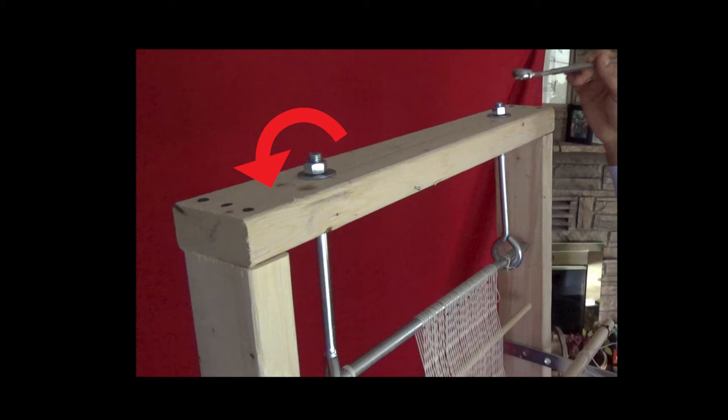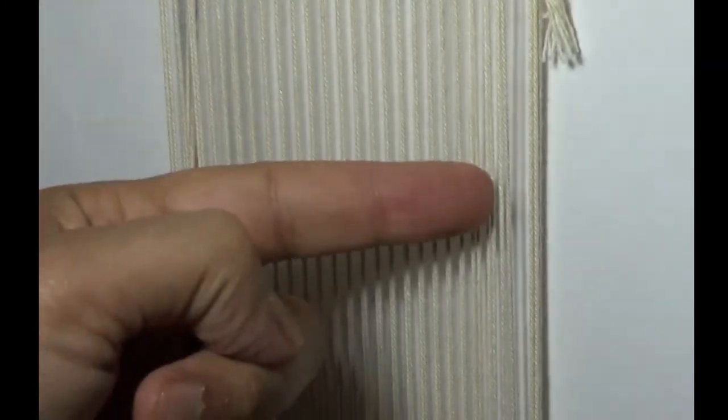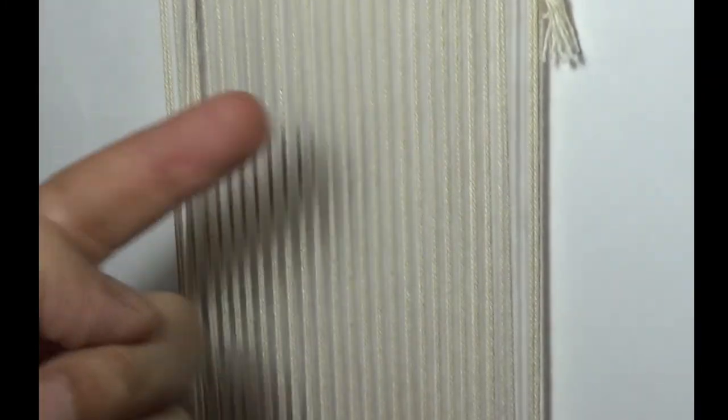As you pull on the strings, you should be able to pull approximately half an inch to one inch. To determine how tight the warps should be is more of an art than a science.